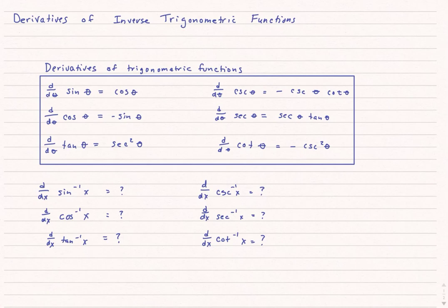Inverse trigonometric functions are very important in calculus. We've already talked about the derivatives of our trigonometric functions sine, cosine, tangent, cosecant, secant, and cotangent — those are ones you need to commit to memory. You're also going to have to know the derivatives of inverse trigonometric functions such as inverse sine or inverse cosine. So how do we come up with those?